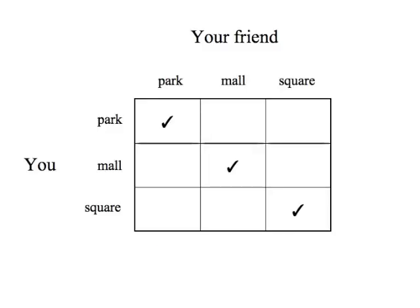So what is a coordination problem? Imagine you want to meet with a friend in the city, and that there are three places where you could meet: the park, the mall, or the square. A coordination game is one in which you want to do something as long as the other player does the same thing. This is a pure coordination game, because both you and your playing partner have the same preferences for each outcome — you both win if you coincide in the same place. The main characteristic of a pure coordination game is that there are many equilibria, or what in Game Theory is referred to as Nash Equilibrium. And the question is, how do you and your partner coordinate to select the same outcome? How do you coordinate on the same equilibrium?